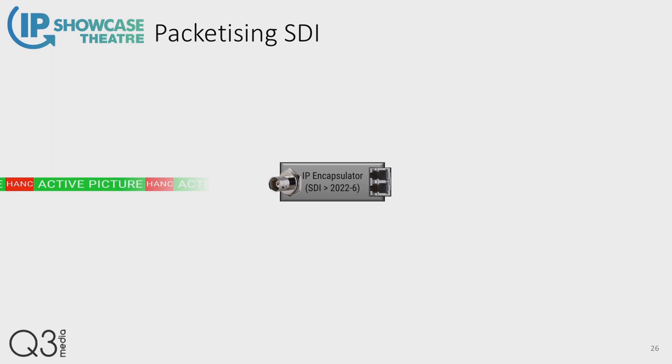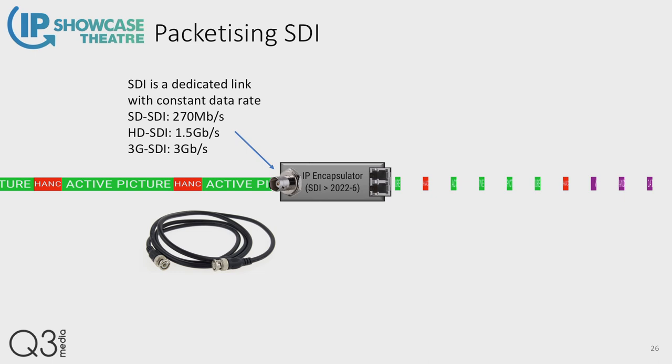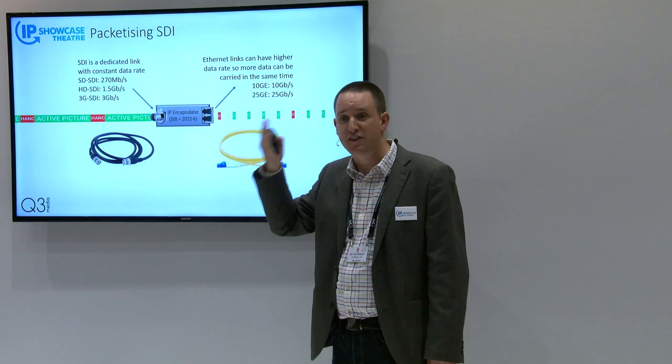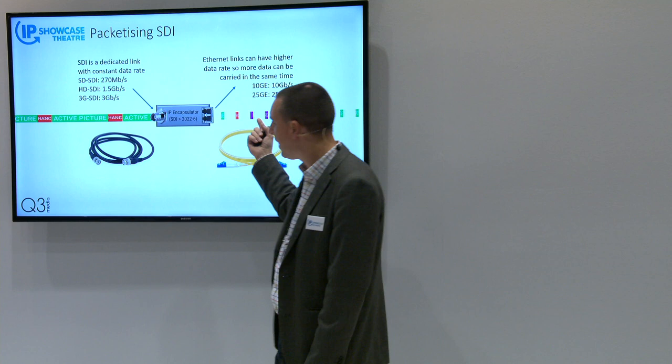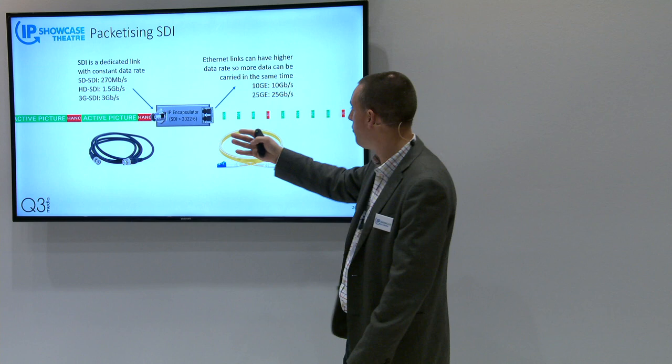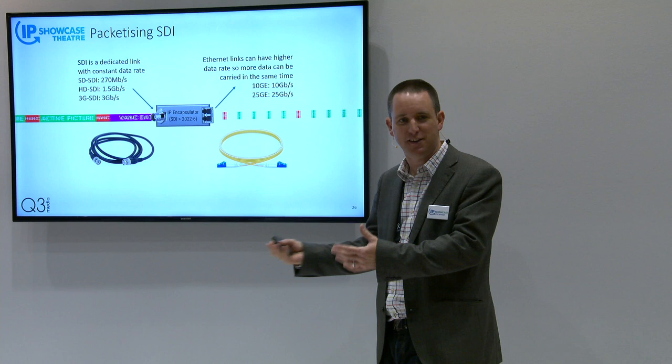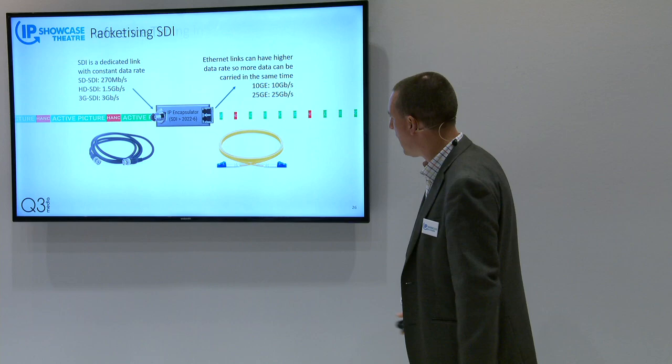When SDI — a continuous data-rate signal — comes in and we're packetizing it for an IP network, the transitions between ones and zeros run at a higher frequency so we can get more data down the wire in the same given time. We're not losing any data; we're horizontally compressing it because we're running at a higher frequency. So the data goes down the wire — people say it goes faster, but of course it's not travelling any faster, it's just squished. This is how it gets us onto the IP network.